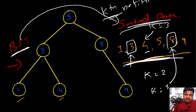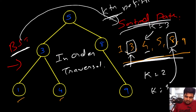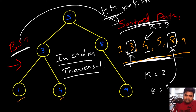The key question is: how do we create this sorted path from the given binary search tree? If you've followed my previous video, you know the answer — it's in-order traversal. Let me quickly show the optimal solution using in-order traversal for this problem.